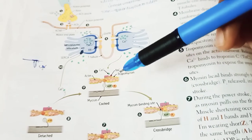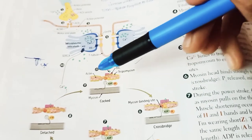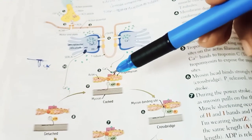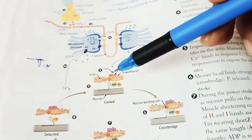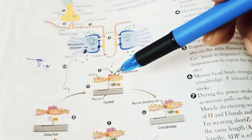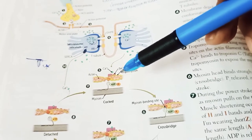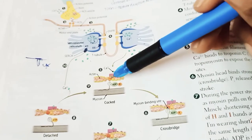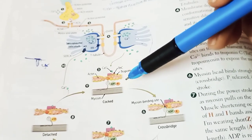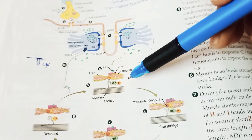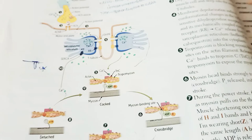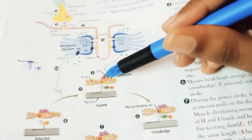There are three types of troponin — troponin C, troponin T, and troponin I — all present on actin. Troponin T binds tropomyosin, which is bound on actin, and troponin I inhibits myosin binding to actin. When calcium binds troponin C, it removes the tropomyosin that covers the myosin binding sites on actin.